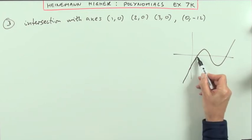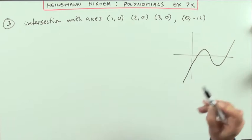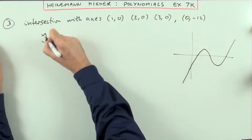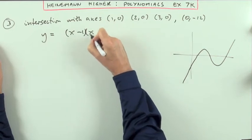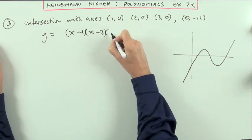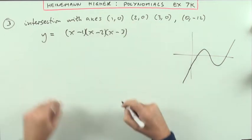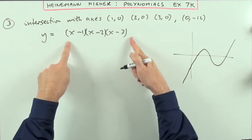That means I can reconstruct the factors that generated it. So this graph must have looked like this. It must have had the factors x minus 1 to generate that, x minus 2 to generate that 0, and x minus 3 to generate that 0. That would have been the result of the factorization.